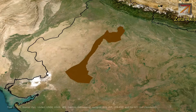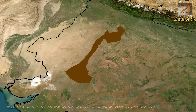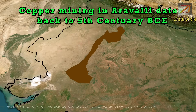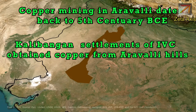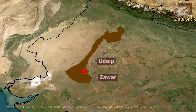The Aravalli range is also a major source of minerals like lead, zinc, and copper. The Aravalli has been a rich source of copper since ancient times, with mining dating back to at least the 5th century BC. Ancient Kalibangan settlements of the Indus Valley Civilization obtained copper from the Aravalli hills. Today, the Khetri Copper Complex in Khetri Nagar is a major source of copper. Zinc mining is also done in Zawar near Udaipur, which is a township created by Hindustan Zinc Limited for the extraction of zinc and lead.